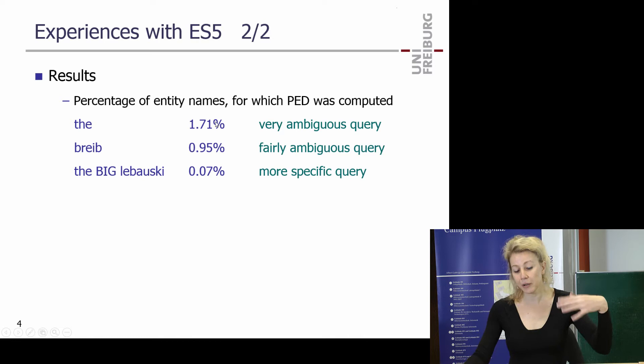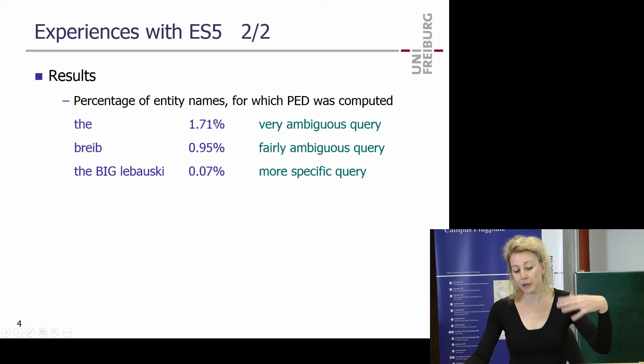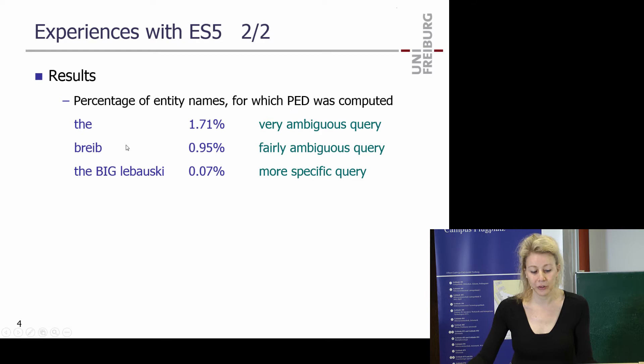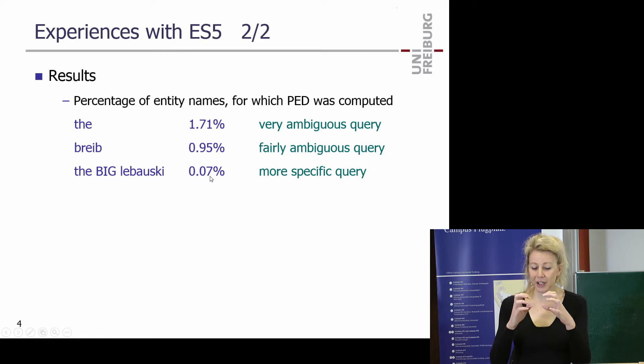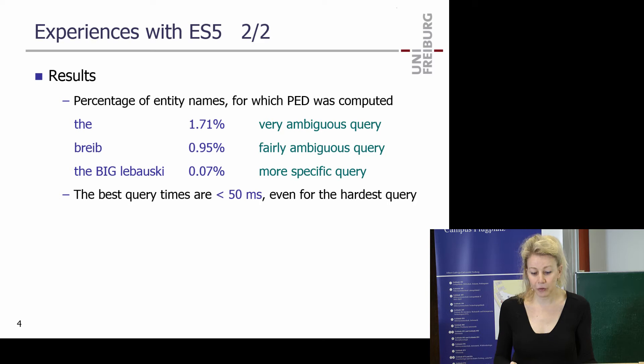We had three queries. For 'the', a very ambiguous query, by the QGram index you only had to check 2% of entities. For 'Breib' it was below 1%, and for this more specific query — more typical of what users type — it's only 0.07%. So only a fraction of the data you actually have to look at in more detail. Best query times are below 50 milliseconds even for the hardest query, 'the'. That's really fast on a big dataset.